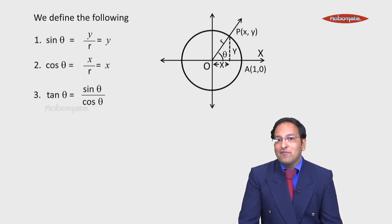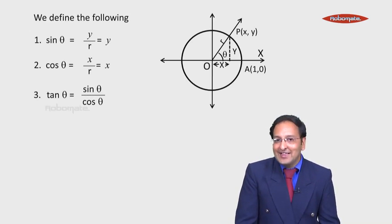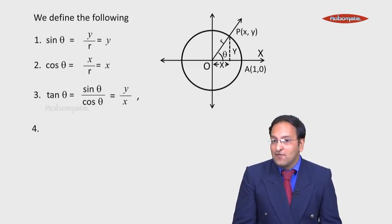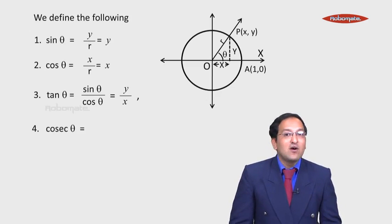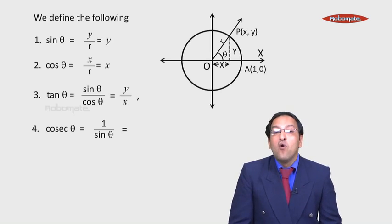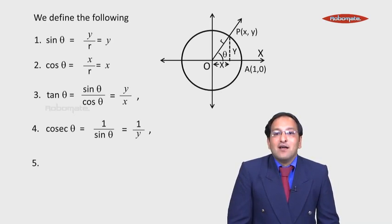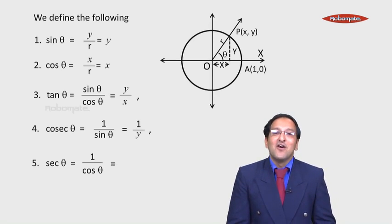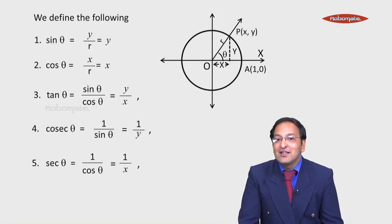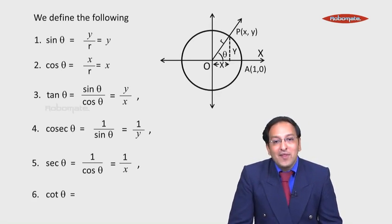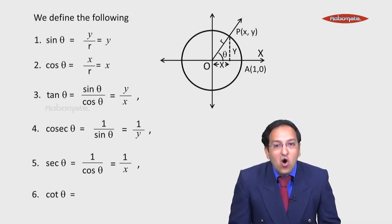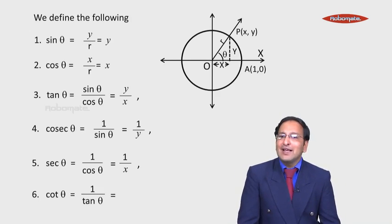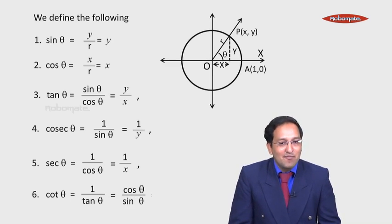Therefore, tan θ equals sin θ upon cos θ, and hence tan θ equals y divided by x. Cot θ is 1 upon tan θ, which equals 1 upon y, since sin θ equals y. Sec θ equals 1 upon cos θ, which is 1 upon x. And cot θ equals 1 upon tan θ, or equivalently cos θ upon sin θ, which is the reciprocal of tan θ. Since tan θ is y upon x, cot θ equals x upon y.